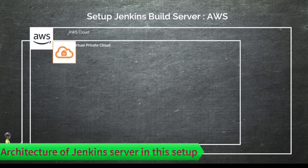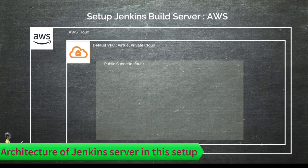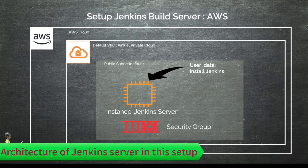We have an AWS account, and in that account we have a VPC. In the VPC we have a public subnet — for simplicity we are using a public subnet, but in a real project you should not expose your Jenkins server to the external world; it would always be a private subnet. In the public subnet we are going to create an EC2 instance which is the Jenkins server, update user data to install Jenkins, and attach a security group.